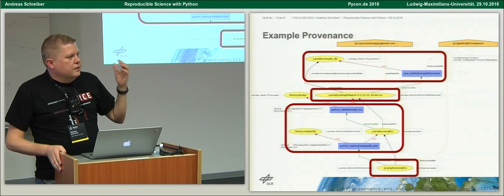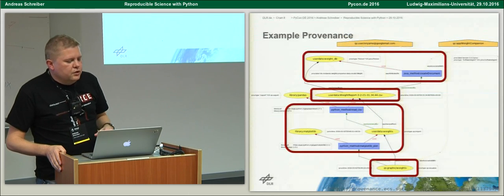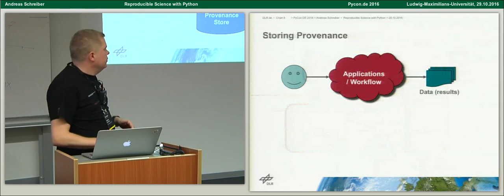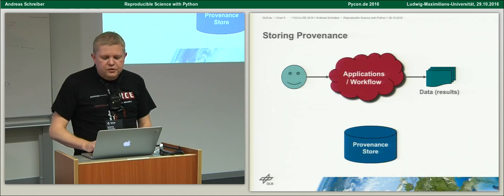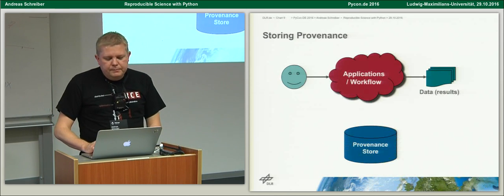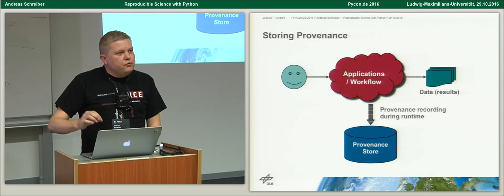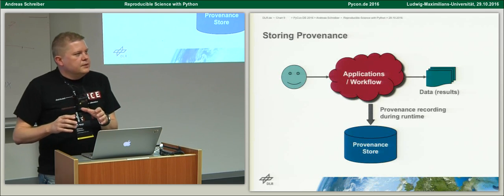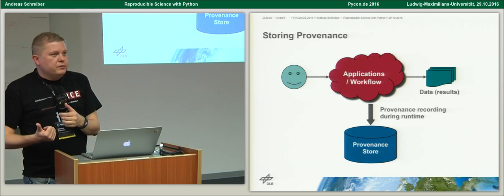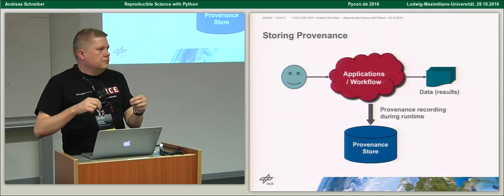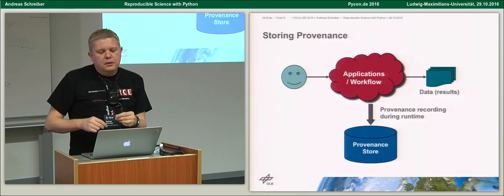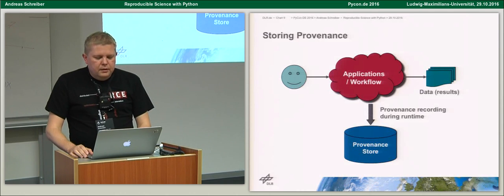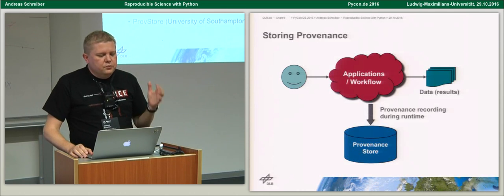To store this kind of thing, you have your workflow or application with input and data results, and you store the provenance data in a provenance store during the process. This is similar to other concepts like logging, but logging is very different because logging has no relations between different elements and different actors. Sometimes it's called lineage or other terms.